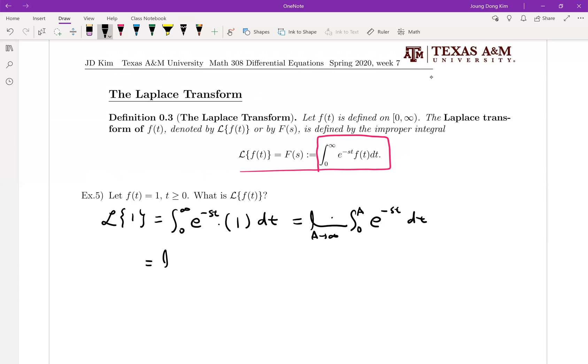And it is equal to limit is there. And anti-derivative of e to the minus st is minus 1 over s times e to the minus st, and we're going to plug in 0 and a.